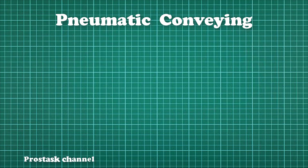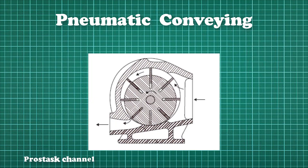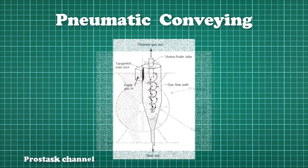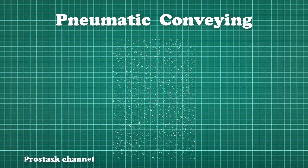Basic conveying system equipment includes a fan that forces material to its destination, a rotary valve feeder that controls the mass flow rate to a destination such as a silo or hopper, a dust collector or cyclone separator that collects dust formed during conveyance, and other basic components such as a rotary airlock valve, conveying line, and diverter valve.